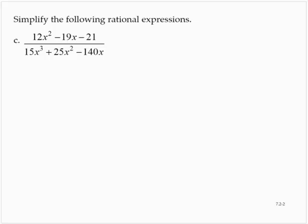12x squared minus 19x minus 21 over 15x cubed plus 25x squared minus 140x. All right, this one's a little messy. It takes a lot of factoring. Again, I will go ahead and just write the factored forms and hope that you remember how to get to those from what you learned back in chapter 4.